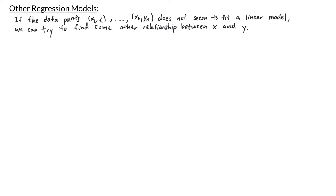In our previous video, we learned to find the least squares regression line for a collection of data points. Now a line might not always be the best representation of your data, so in this video we'll look at some other models that we can make. If I have a collection of data points x₁, y₁ through xₙ, yₙ and it doesn't seem to fit a linear model, what we can try to do is find some other relationship between x and y.